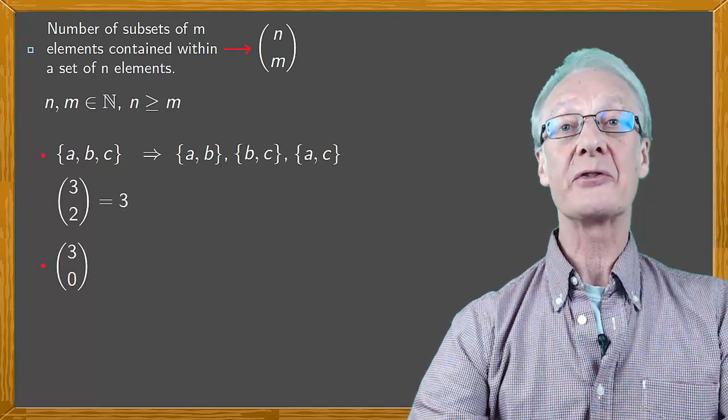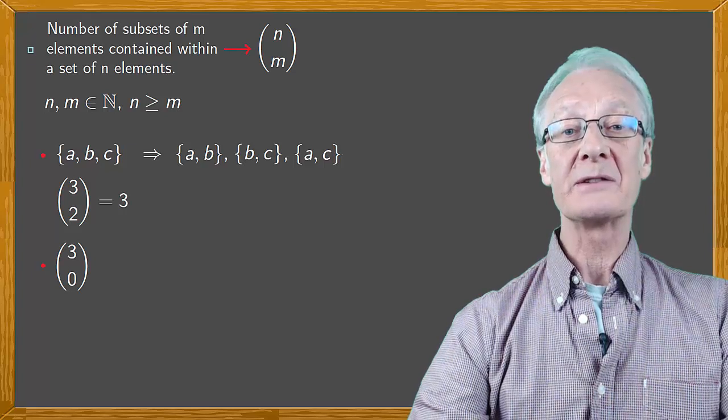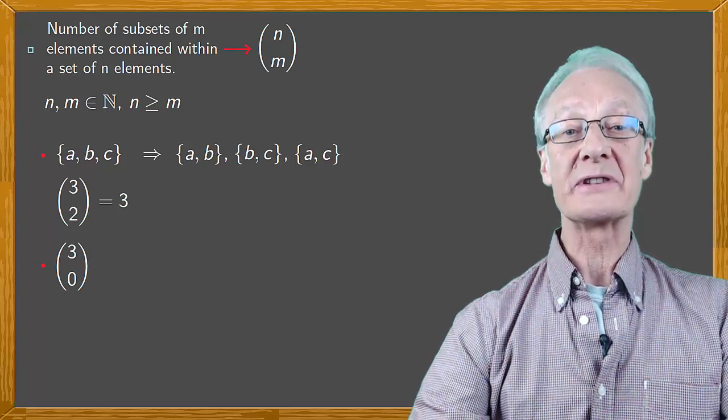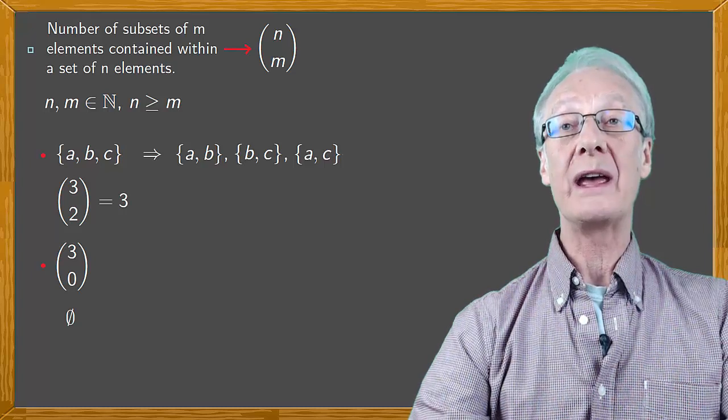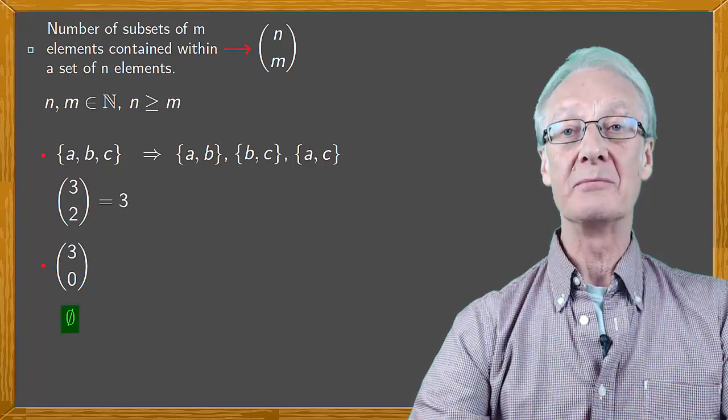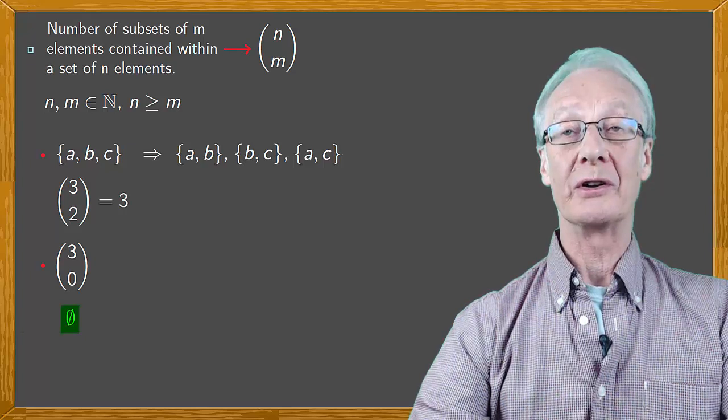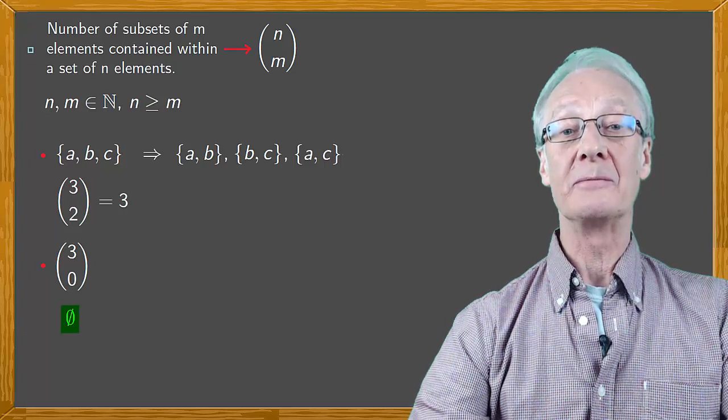In the case of three over zero, this means the number of subsets of zero elements in a set of three elements. Because there's only one empty set, the number of subsets is one. So three over zero is one.